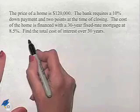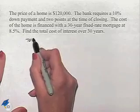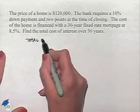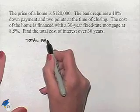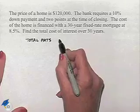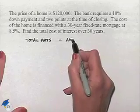Our total cost of interest is going to be found by taking the total payments that we've made on the financed amount minus the amount of the mortgage.